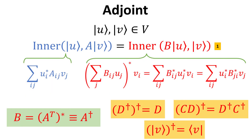Here, we are interested in matrices or operators where their entries are complex numbers in general. First up is the adjoint operator. Let A be a linear operator on a Hilbert space V. There exists a unique linear operator B, known as the adjoint of A, where one can define an inner product of the ket U and V as follows in equation 1.